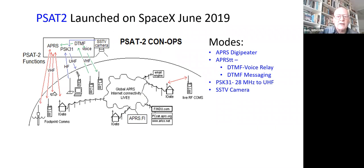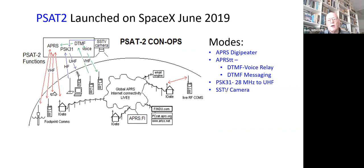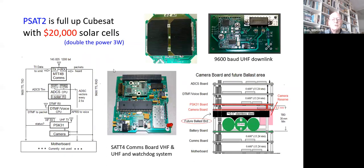PSAT 2 was launched in June 2019, worked beautifully, but two months later the VHF transponder died. The PSK-31, slow-scan TV, and voice transponder — with HF up and FM down — are still operational.